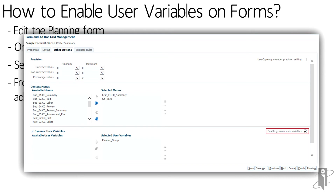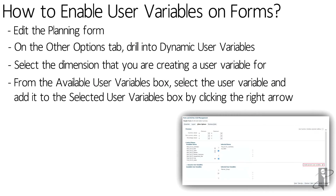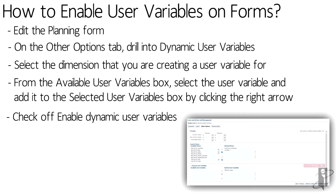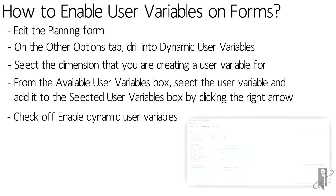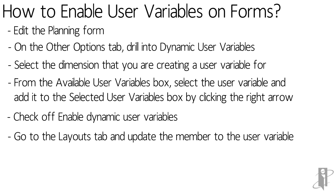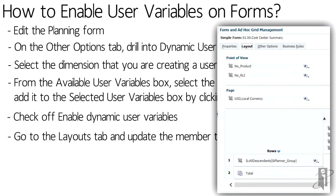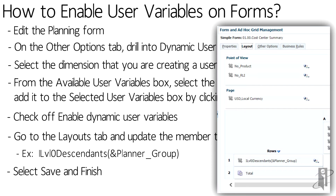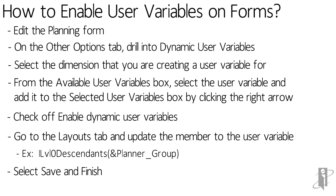On the very right-hand side, you'll see it says Enable Dynamic User Variables. Make sure to have that checkbox marked to actually use a variable within the form. Go back to the Layouts tab and update the member to the user variable. For this example, we're using the planner_group user variable, and we have to place an ampersand before it to actually use the user variable. Select Save and Finish on the form and you have now added a user variable to the form.